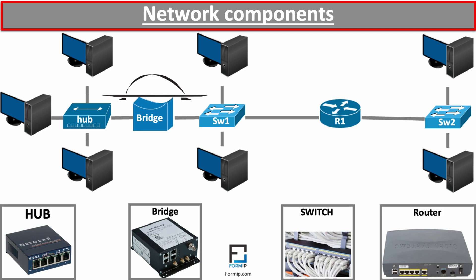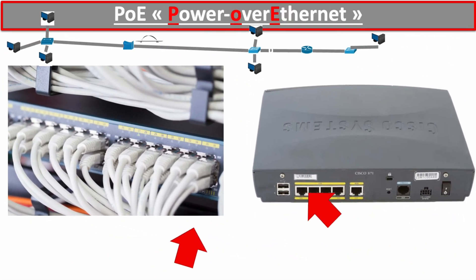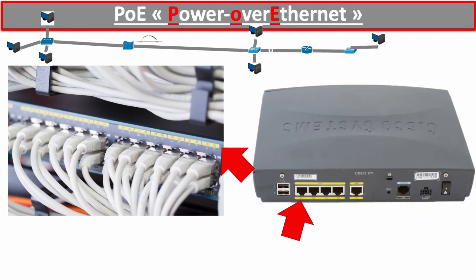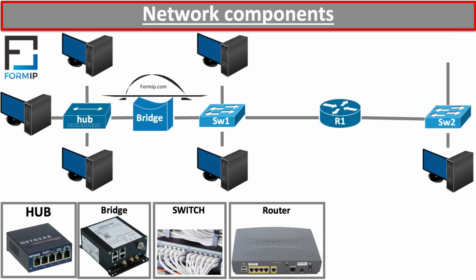A quick aside on network equipment: you will sometimes see a yellow stripe on the ports of a switch or router, indicating they are PoE — Power over Ethernet — compatible. This means they provide a power supply in addition to data connectivity, preventing the equipment from needing a separate electrical cable. This is very useful, especially for Wi-Fi hotspots and IP phones.